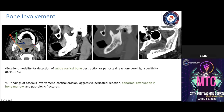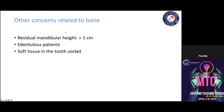Squamous cell carcinoma causes bony erosion even in early stages, so CT is an excellent modality for identifying subtle cortical erosions and periosteal reactions, with approximately 90% specificity. In advanced disease, there may be abnormal bone marrow attenuation or pathological fractures. We should report on bone windows and multiplanar reconstructions.